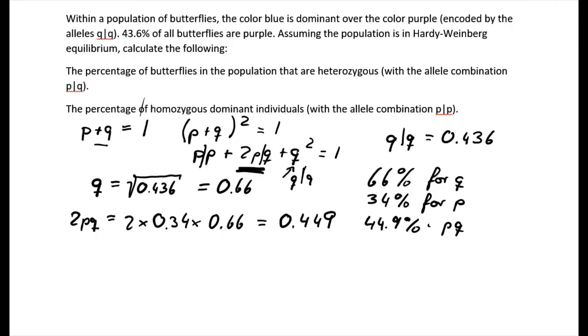For the homozygotes, the dominant ones with PP, that's again quite simple. All we need to do is 0.34 squared, that is the frequency for P, and that gives us roughly 11.6%.